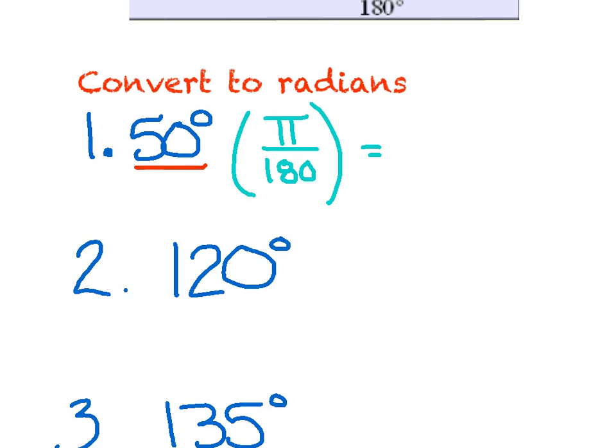All I'm going to say is, I could really make this a fraction, so I really have on top 50 pi over 180. All right, and we just want to make sure we simplify, and I think the easiest thing to do is say, I have a 0 on top, a 0 on the bottom. I can kill those 0s, and say I really have 5 pi over 18. And that's it.